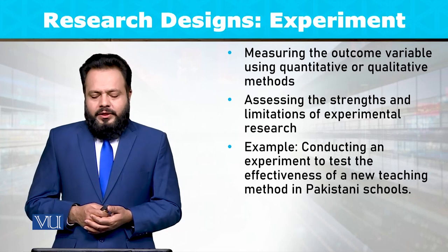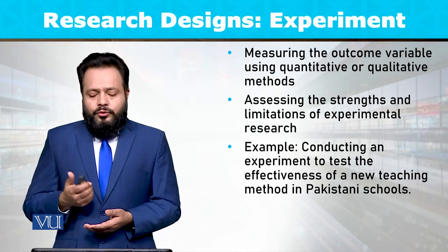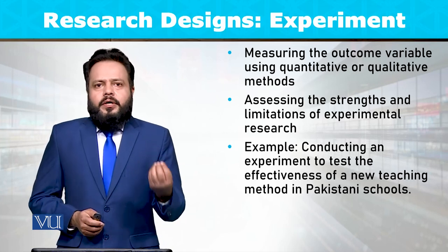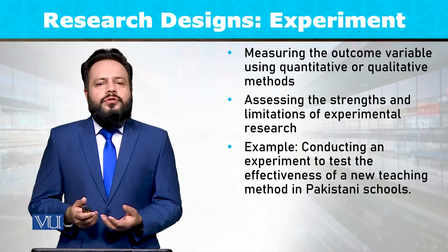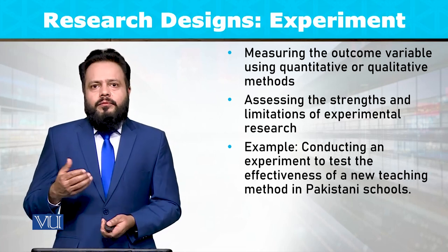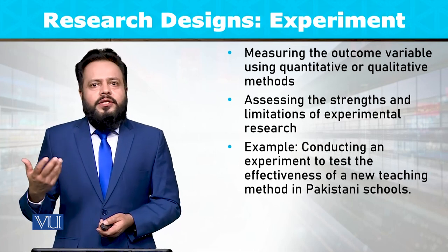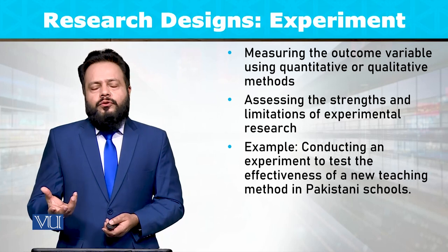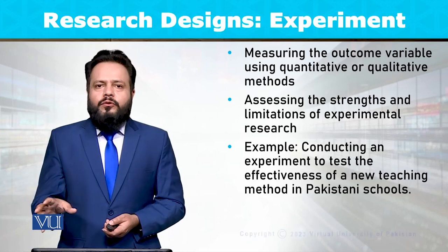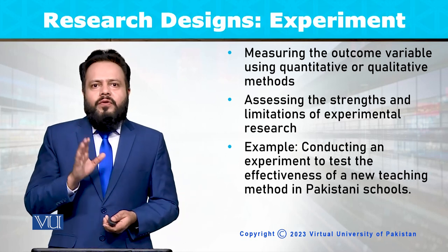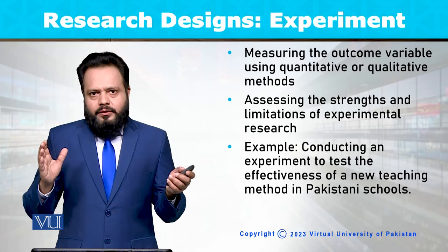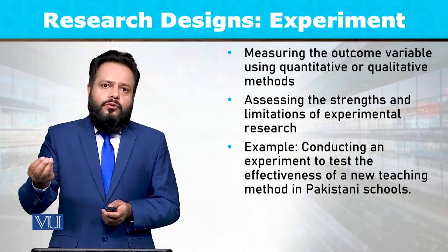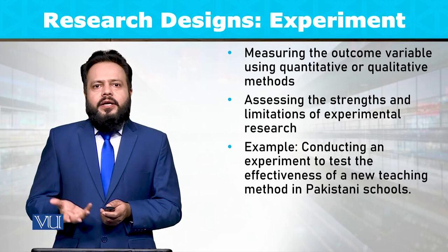For example, we can consider conducting experimental research to test the effectiveness of a new teaching method in a Pakistani school. We would introduce a relatively unconventional teaching method and see whether its effectiveness is greater or less than conventional or traditional methods. We can introduce it as an experiment in different schools — one as the experimental group and another as the control group without that variable — and then draw a conclusion about whether the newly introduced method is effective or not.